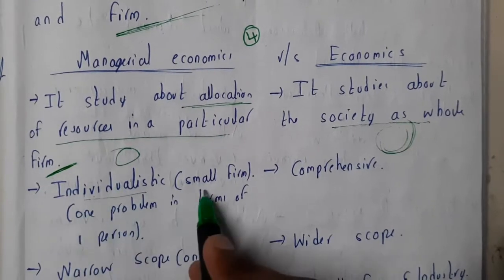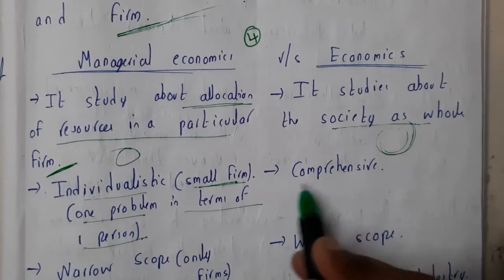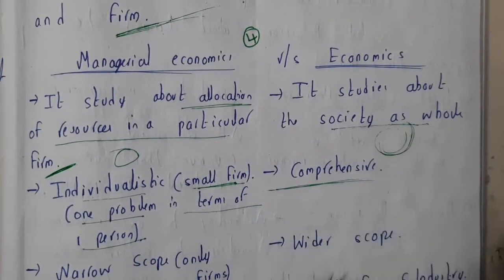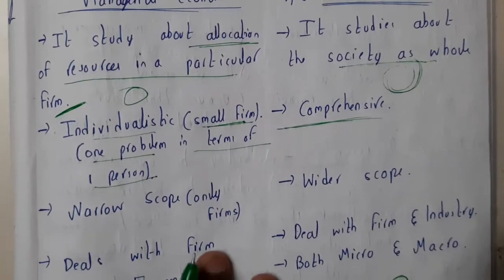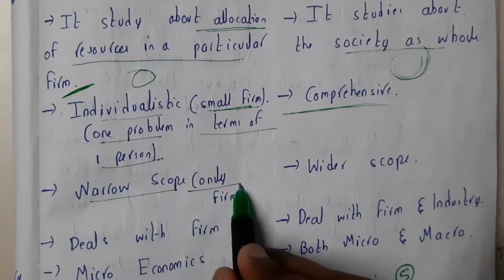Individualistic, that is small firms, one problem in terms of one person, whereas economics will be in terms of comprehensive. So managerial economics will be in terms of a narrow scope, that is only one firm.